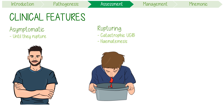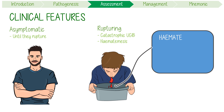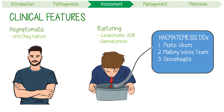Everything can be remembered in fours. Hematemesis has a specific set of four differentials: peptic ulcers, Mallory-Weiss tears, esophagitis, and non-GI bleeds — for example, a posterior nosebleed that drips into your stomach and then you vomit it back up.